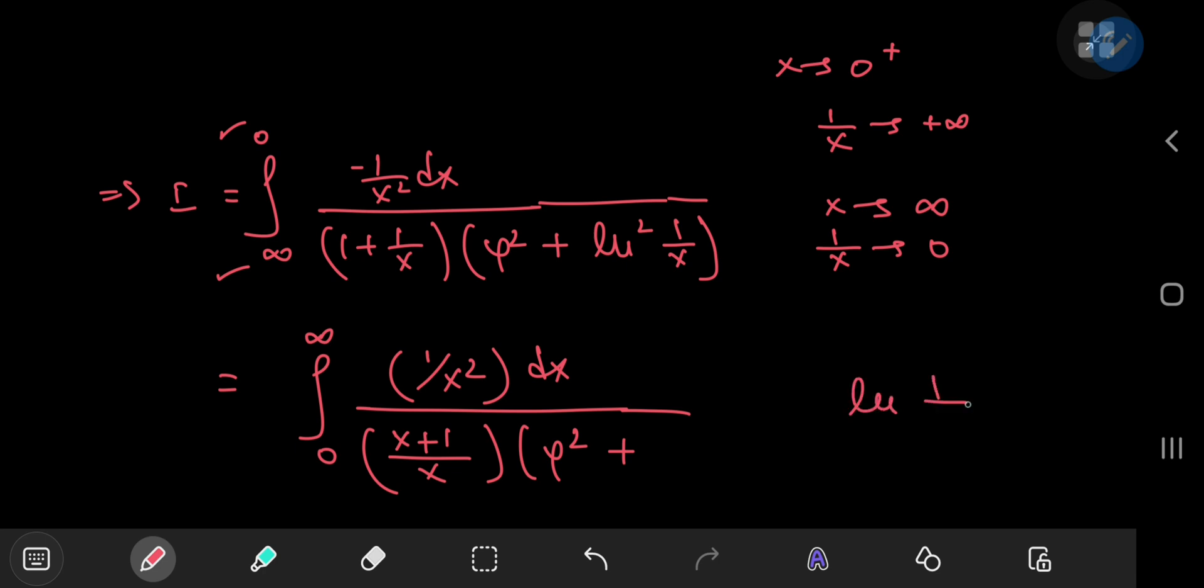the natural logarithm of the reciprocal of x equals the negative of the natural log of x. However, if you square the whole thing, then you're rid of the negative sign. So that means you still have the square of the natural log of x.